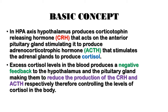The hypothalamus is responsible for the production of corticotropin-releasing hormone, which acts on the anterior pituitary gland, stimulating it to produce ACTH. ACTH then stimulates the adrenal glands to produce cortisol from the adrenal cortex. When there are excess cortisol levels in the blood, they produce a negative feedback mechanism to the hypothalamus and the pituitary gland, reducing production of corticotropin-releasing hormone and adrenocorticotropin hormone.